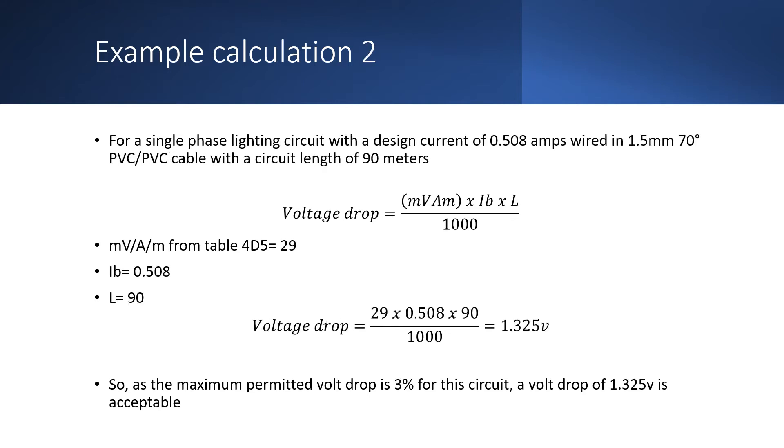So here we have another example, this time for a lighting circuit. For a single phase lighting circuit with a design current of 0.508 amps wired in 1.5mm 70 degree PVC-PVC cable with a circuit length of 90 meters. So the value for millivolts per ampere per meter is taken again from table 4D5 and that comes to 29. The design current is 0.508 and the length of the circuit is 90.